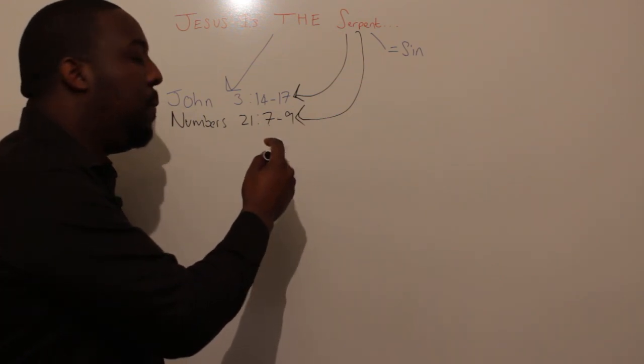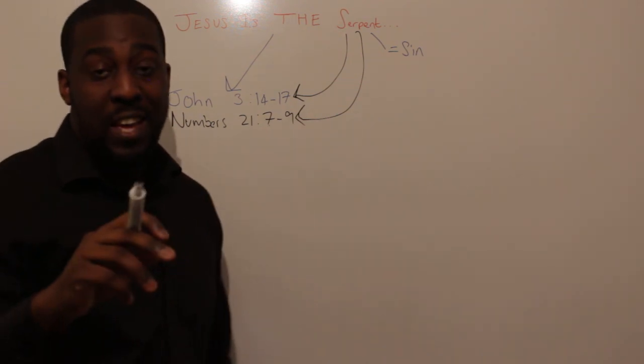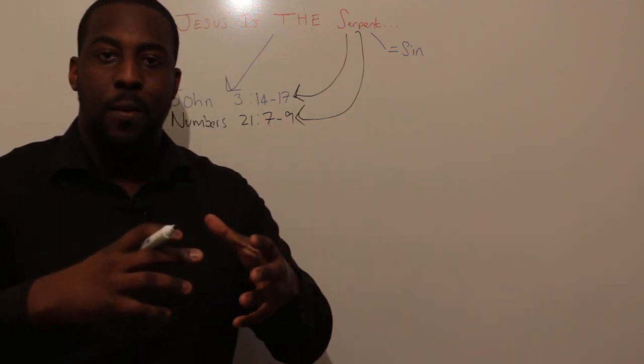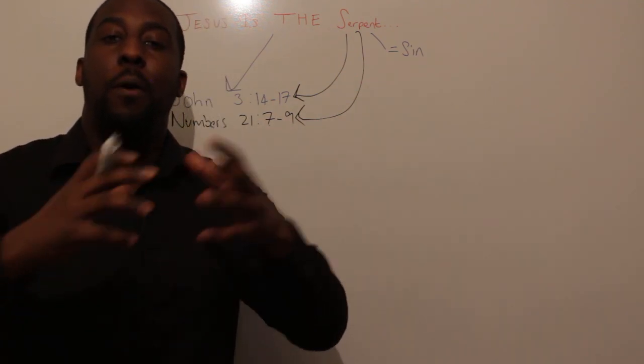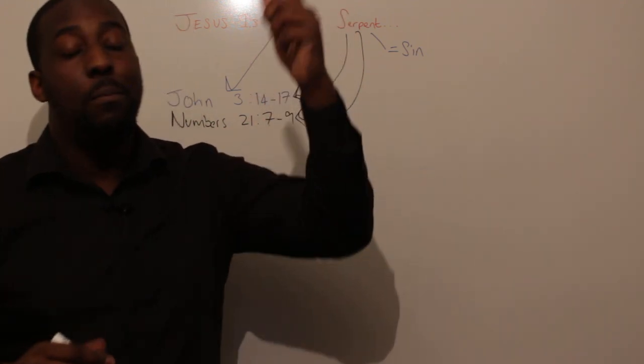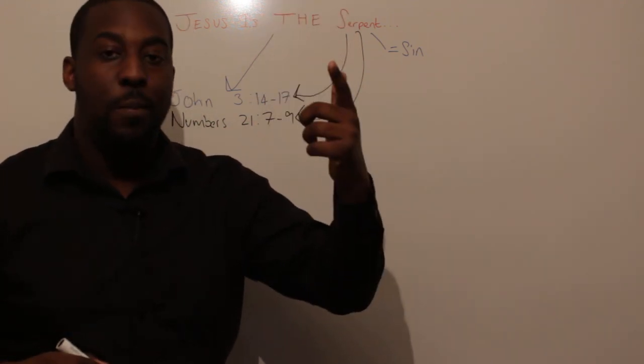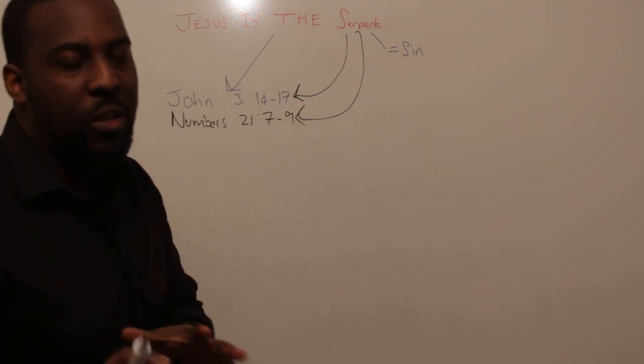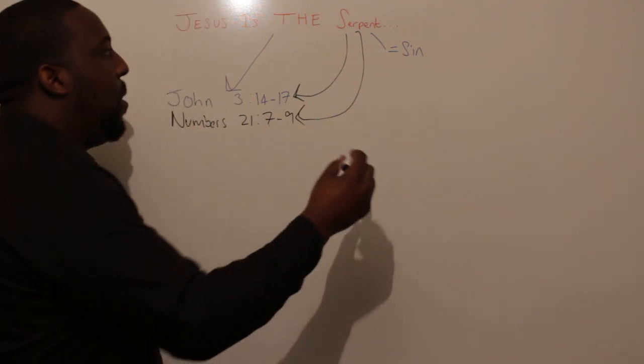And what did God say to Moses? God said to Moses, make a serpent, put it on a pole and lift it up, and everyone that looks up to the pole, to the serpent, shall live. Now how is that in comparison to what Jesus was saying? Number one, he said he was the serpent.